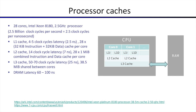Let us look at a real processor, specifically the processor caches and memory, and how instructions get loaded into the processor and how it gets its data. I have looked at a real processor — the Intel Xeon 8180. It has 28 cores and operates at 2.5 GHz, which means 2.5 billion clock cycles per second, or 2.5 clock cycles every nanosecond. Every clock cycle will partially complete an instruction.